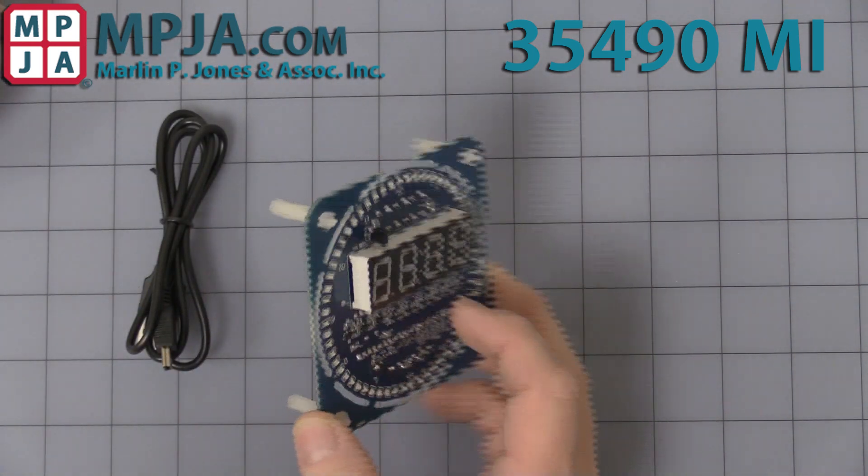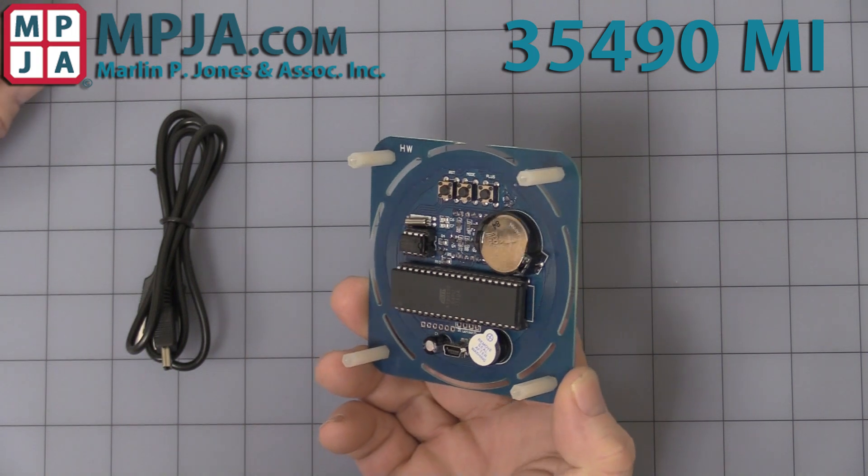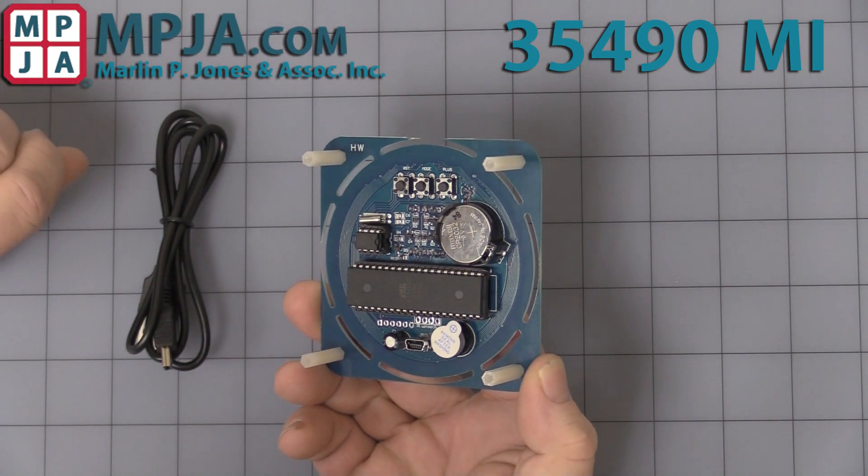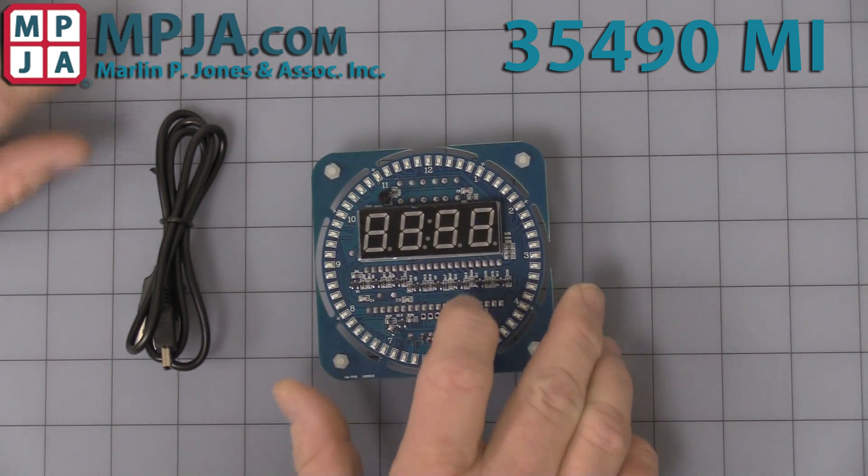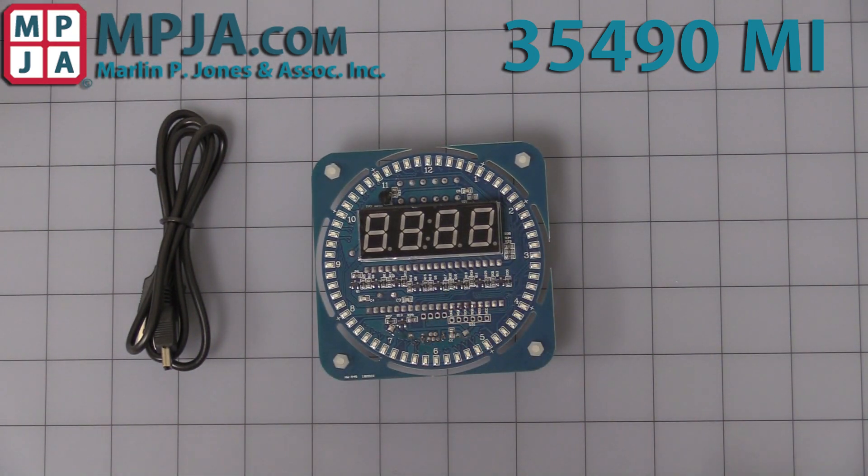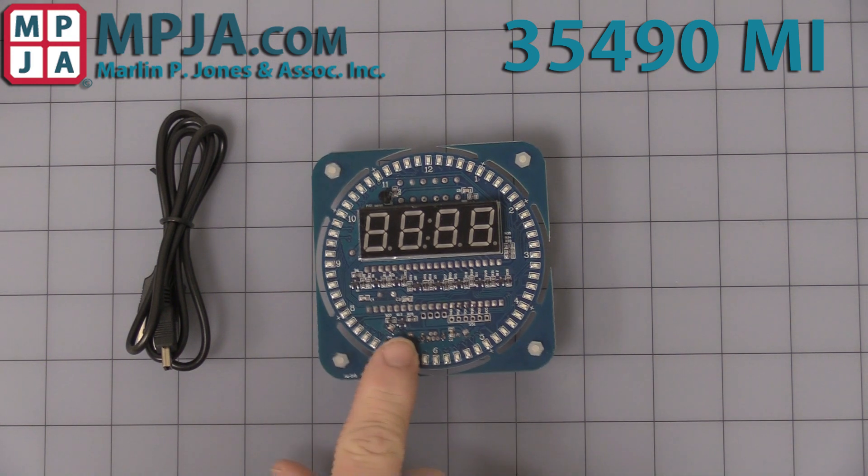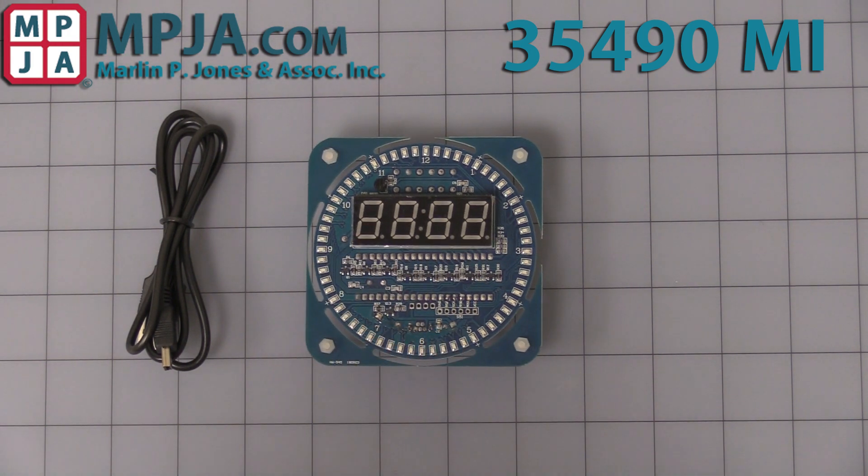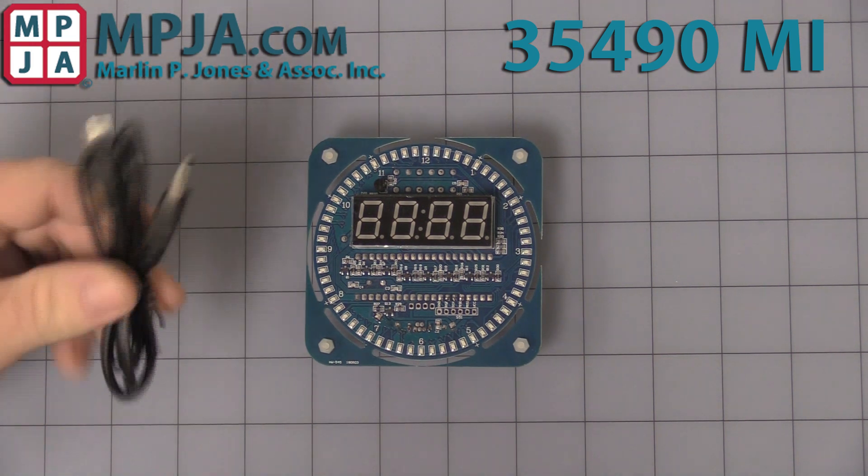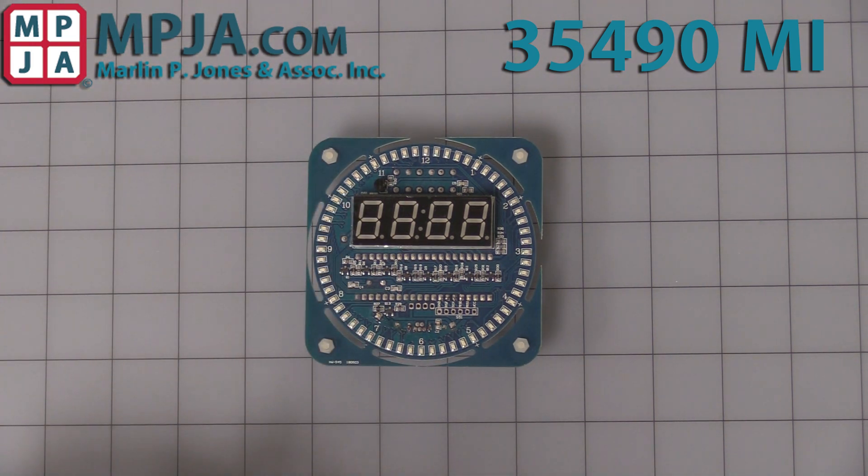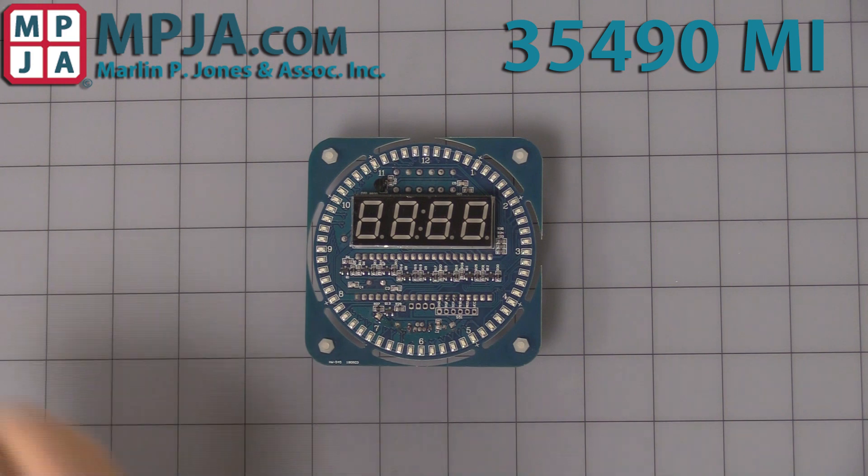It uses a CR2032 battery that's only good for maintaining memory and settings and running the crystal clock. It will not display without being powered up. It comes with a little USB cable which is the mini B.